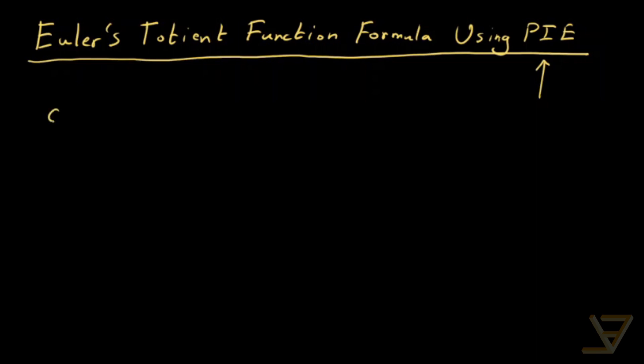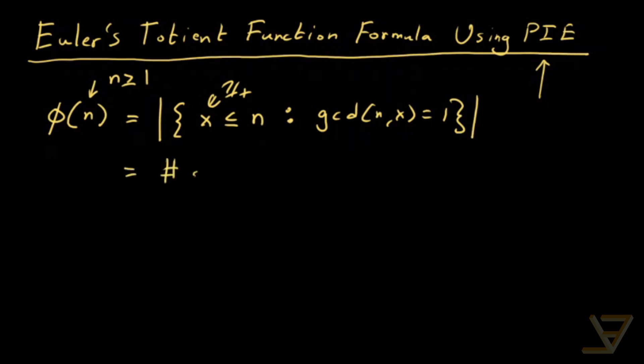As the definition of the phi function, for positive integers n, phi of n (Euler's Totient function) is equal to the cardinality of the following set: all of the integers x that are less than or equal to n, they're positive integers such that the GCD of n and x is equal to one. So this is equal to the number of coprime positive integers less than or equal to n.